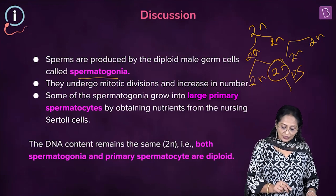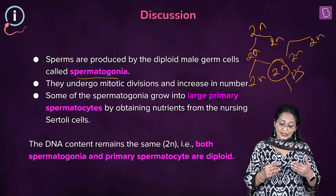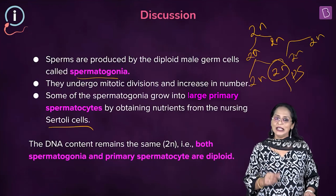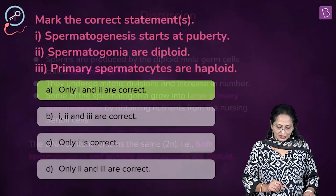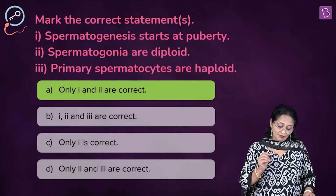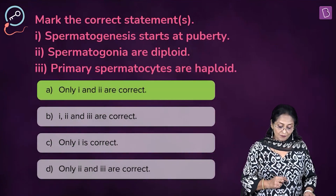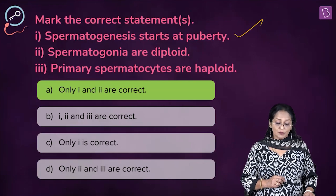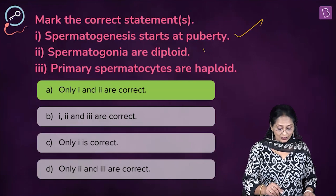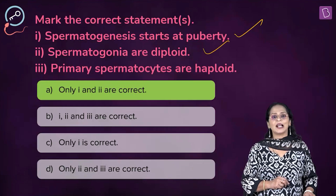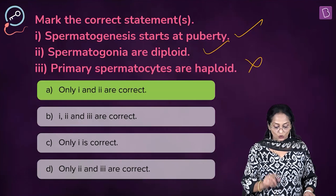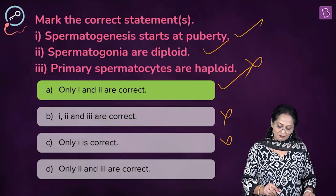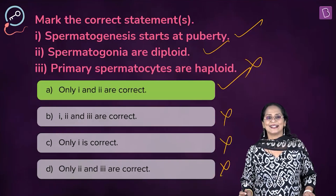Some spermatogonia differentiate and get nourishment from the Sertoli cells or nurse cells. Now checking the statements: spermatogenesis starts at puberty — yes, statement 1 is correct. Spermatogonia are diploid — yes, statement 2 is correct. Primary spermatocytes are haploid — no, this is incorrect. So only 1 and 2 are correct. Option A is the right answer. You can eliminate B, C, and D.